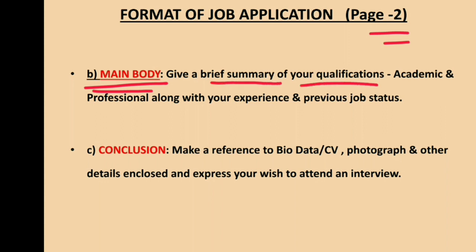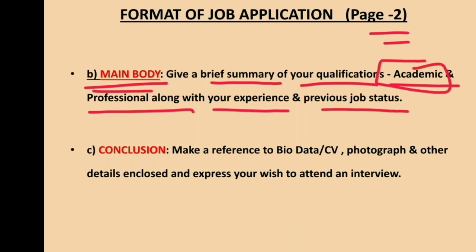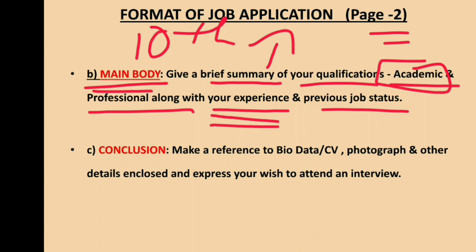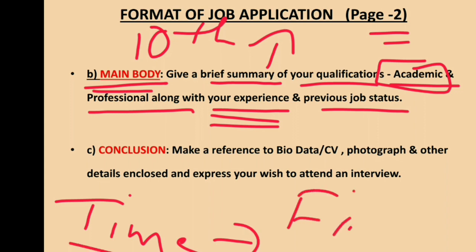On Page 2, in the body section, write a brief summary of the candidate's qualifications. This includes academic and professional qualifications along with experience and previous job status. For academics, include 10th class onwards — 10th, 12th, graduation, and master's degree. For professional qualifications, create a separate section. For experience, mention where you worked, the time duration, and the institution's or company's name.